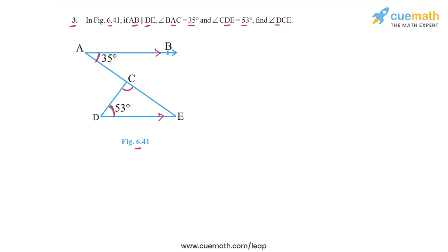The reasoning we'll use to solve this problem is we'll first find angle DEC by making use of the fact that this angle makes an alternate interior angle pair with this angle here. Once we've done that, we can apply the angle sum property to triangle CDE because two of the three angles will be known, so we can find the third angle, angle DCE.